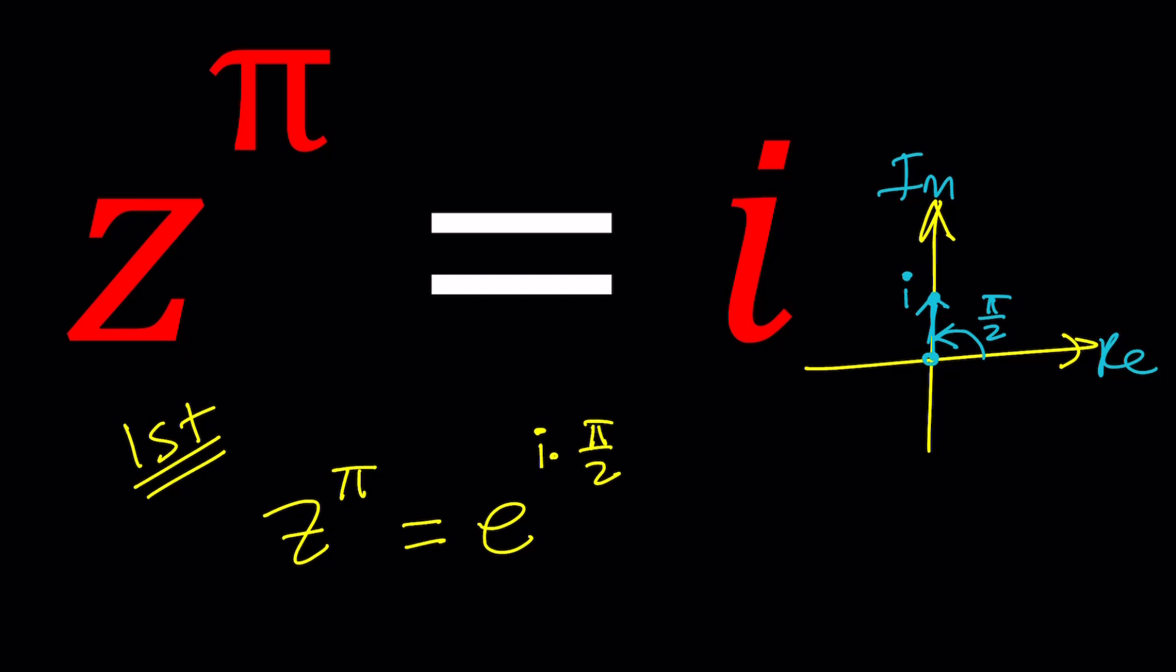But we don't really need all of these angles listed. Instead, we could just add 2π n as a multiple of 2π to it, where n is an integer.